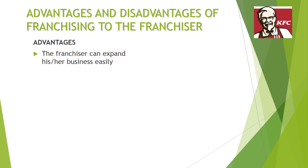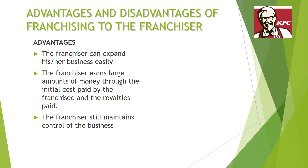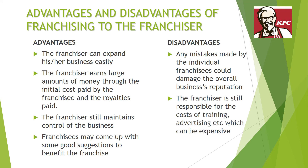Looking at advantages and disadvantages of franchising to the franchiser first: advantages are that they can expand their business really easily by allowing people to buy branches. The franchiser can earn large amounts of money through the initial cost paid to them and through the royalty paid every year on profits. The franchiser still maintains control of the business, and if the franchisee comes up with good suggestions it can benefit the franchise generally — the famous example being the Egg McMuffin for McDonald's, which was actually thought up by a franchisee. Disadvantages: any mistakes made by an individual franchisee could damage the overall business's reputation — poor sanitation, poor cleaning, poor quality or improperly cooked food. The franchiser is also still responsible for the cost of training, advertising, etc., which can be expensive.